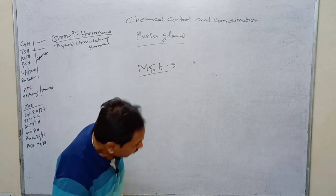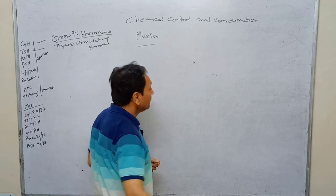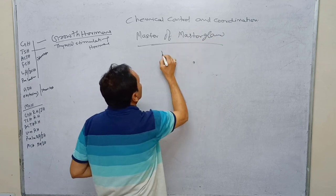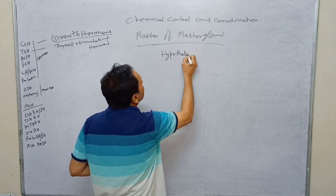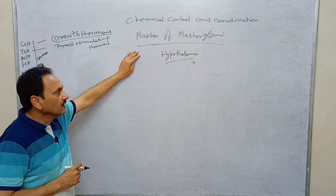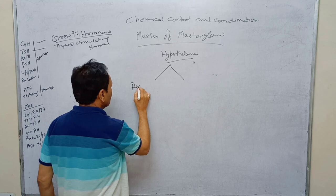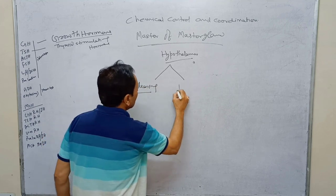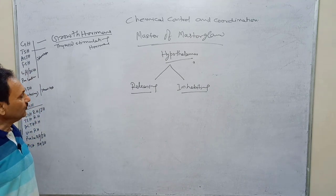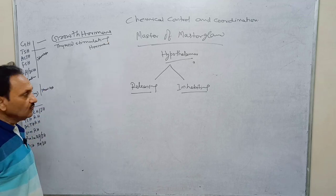The next gland is the master of the master gland, and that is called the hypothalamus. The hypothalamus is inside the brain case and releases two types of hormones: one is called releasing hormone, and the other is called inhibiting hormone. Most of the hormones released from the master gland (pituitary) are under the control of the hypothalamus.